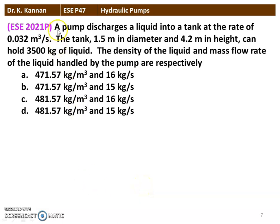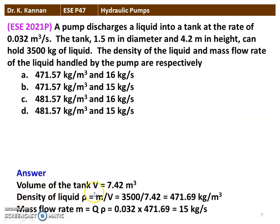The next question from the 2021 question paper: a pump discharges liquid into a tank at 0.032 m³/s. The tank is 1.5 m diameter and 4.2 m height and can hold 3500 kg of liquid. We calculate: Volume = π/4 × d² × H = 7.42 m³; density ρ = mass/volume = 3500/7.42 = 471.69 kg/m³; mass flow rate M = Q × ρ = 0.032 × 471.69 = 15 kg/s. The correct option is B: density 471.57 kg/m³ and mass flow rate 15 kg/s.